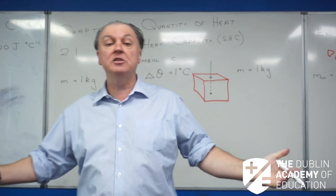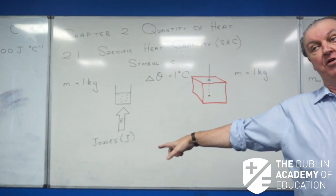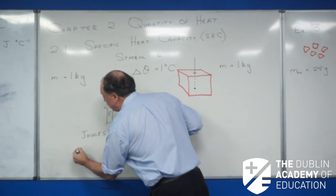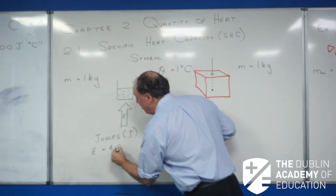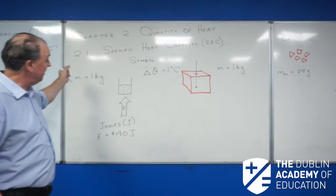The starting temperature might be 20 degrees Celsius, and I want to raise it to 21 degrees Celsius. The question is, how much energy do I need to put into that water to make one kilogram of it go up by one degree Celsius? They've done these experiments a long time ago, and they've worked out that the total amount of energy E that needs to be put in is 4,180 joules of heat energy.